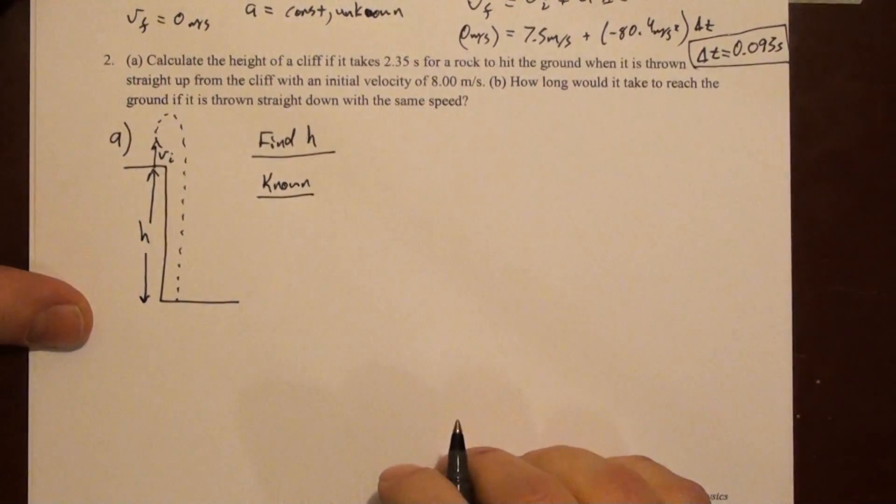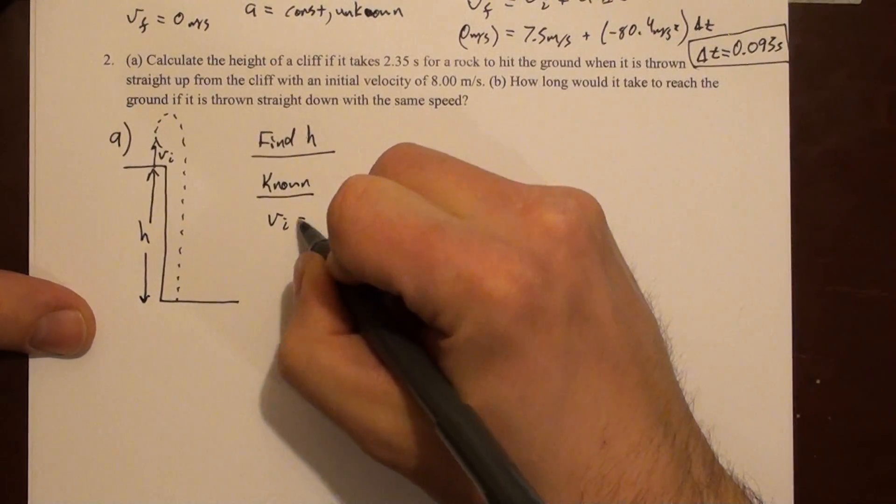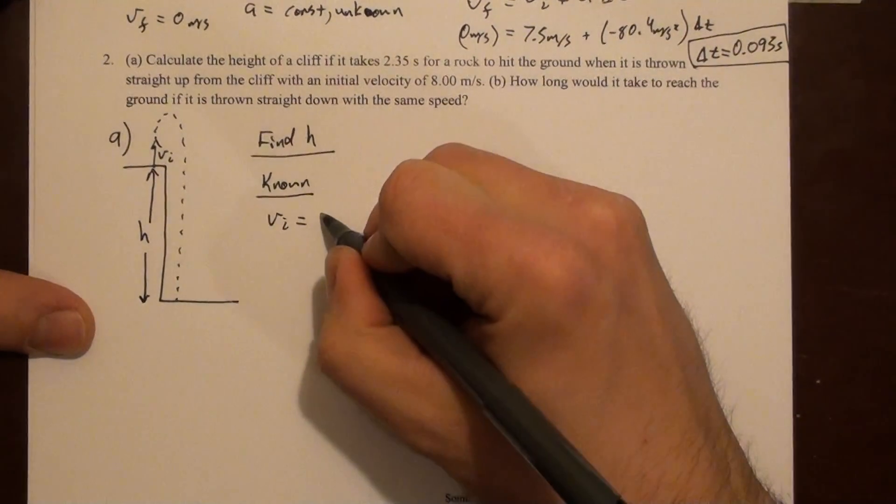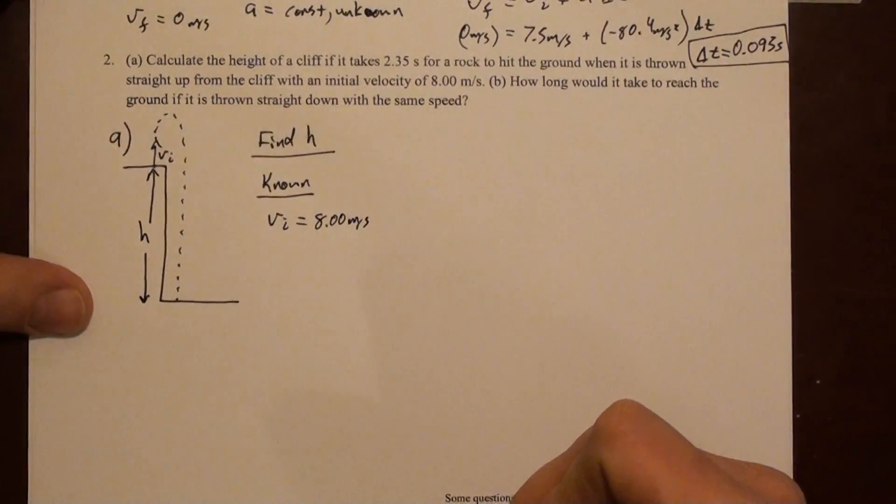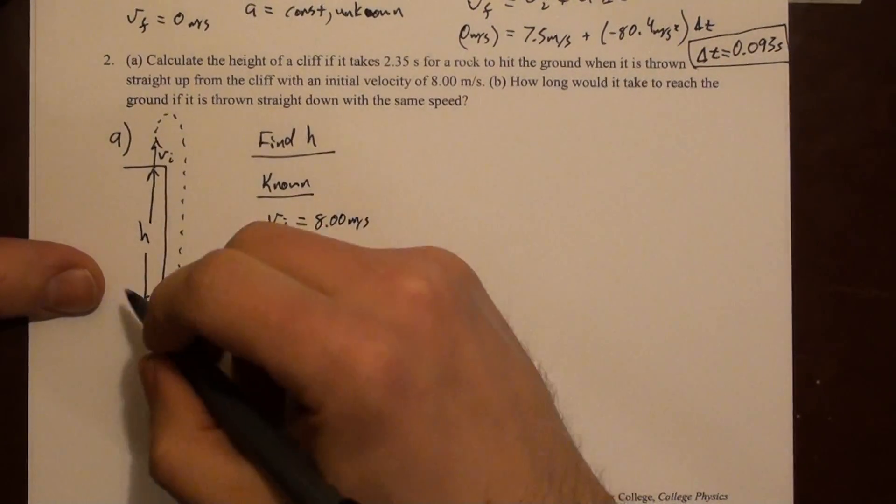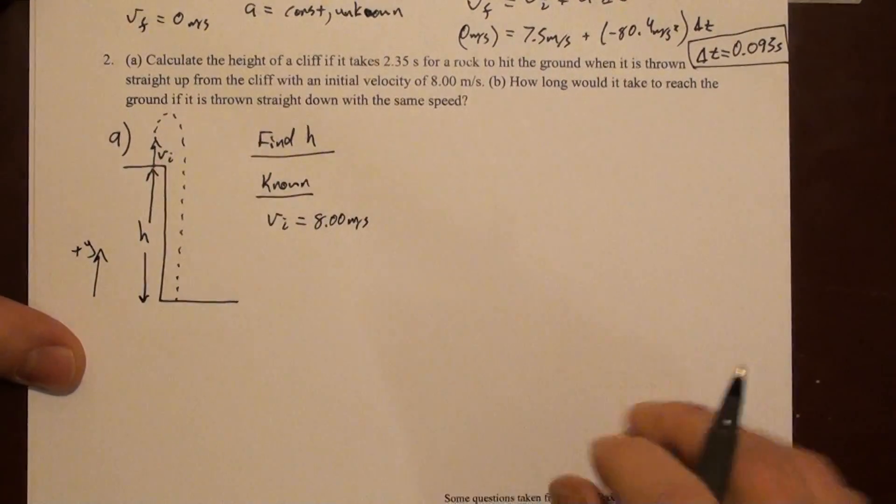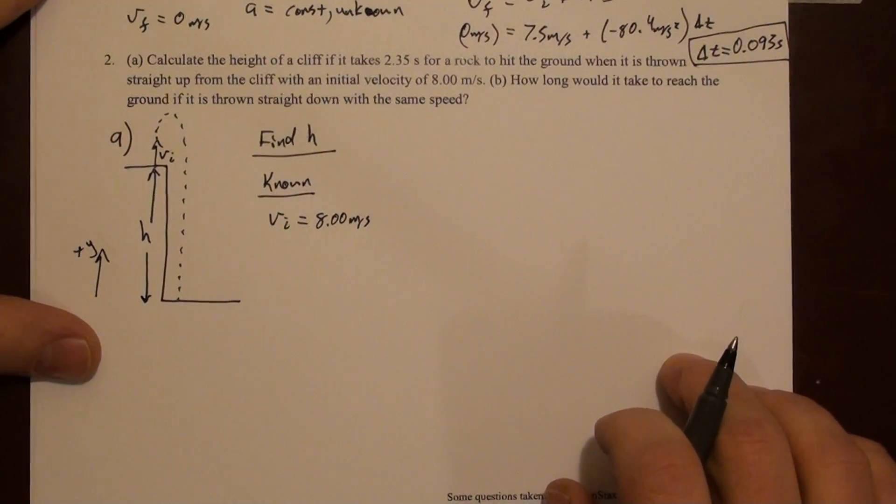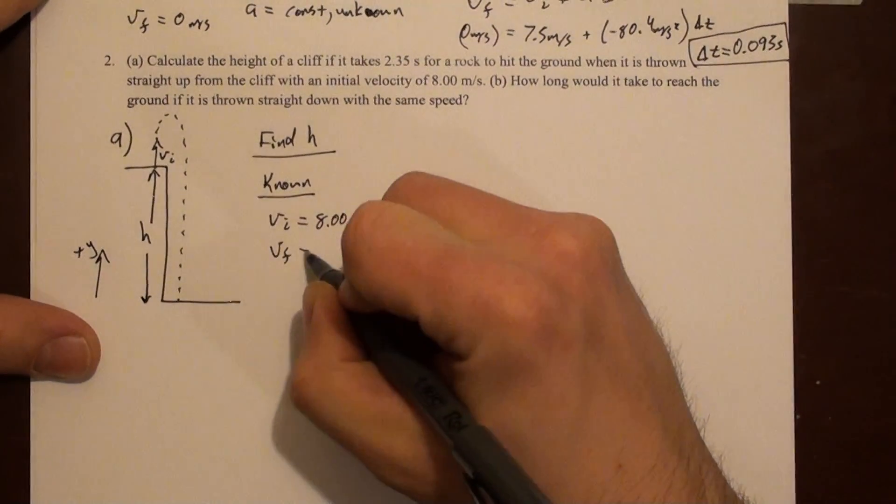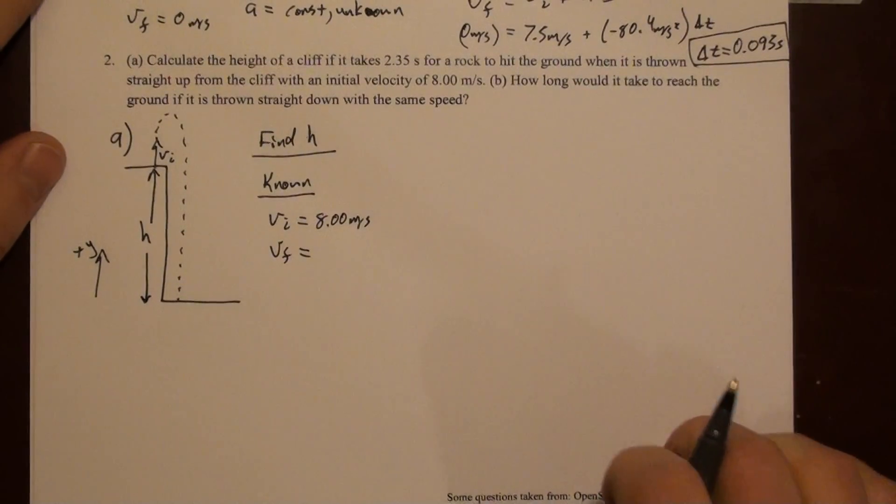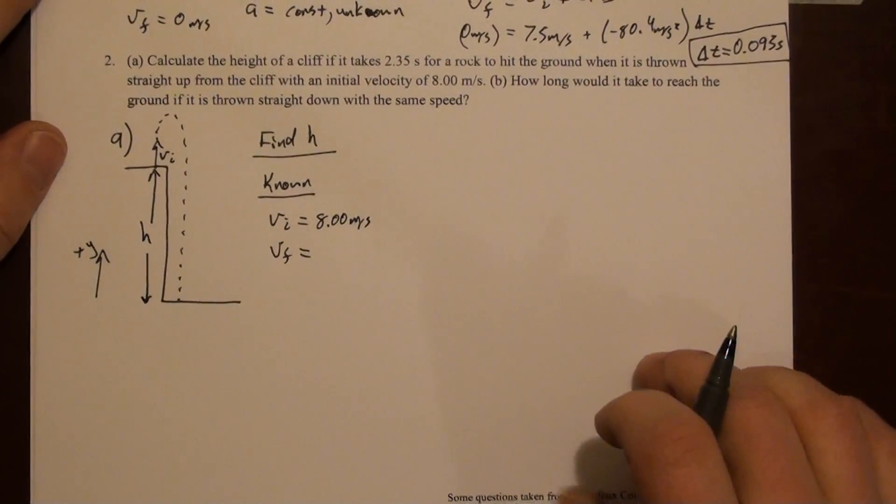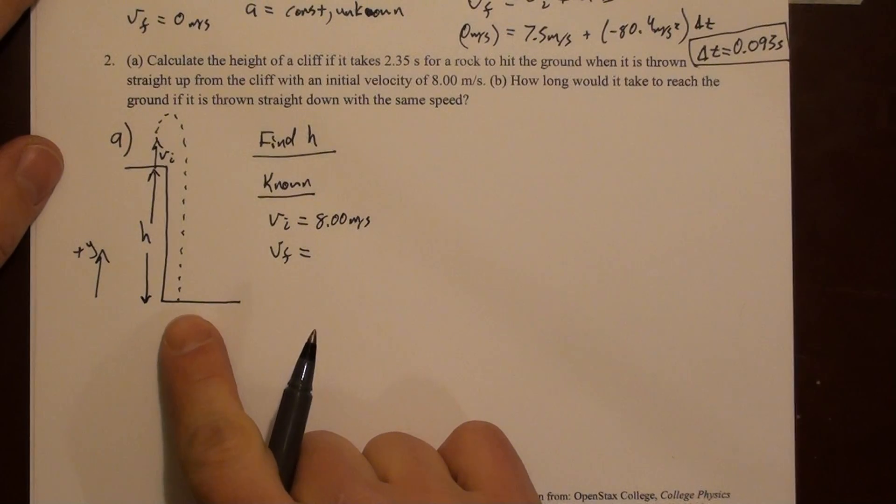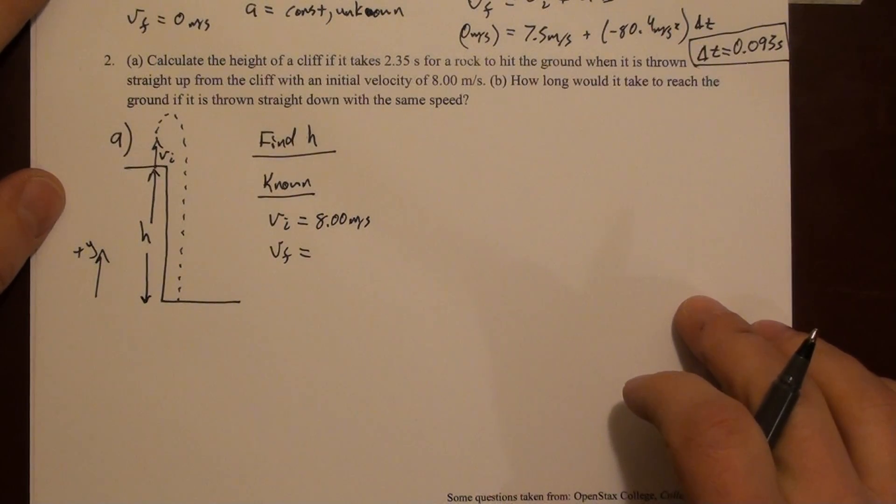So let's write down what we know. We know that v initial is 8 meters per second. We chose a positive here, which means that we've chosen up to be our positive y direction. We could write down v final. It's tempting, and I've mentioned this before. It's tempting to say v final is zero. Because indeed, once it hits the floor of this cliff, it will stop.